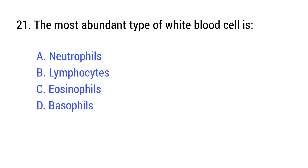Question number 21. The most abundant type of white blood cells is — the right answer is option A: Neutrophils.